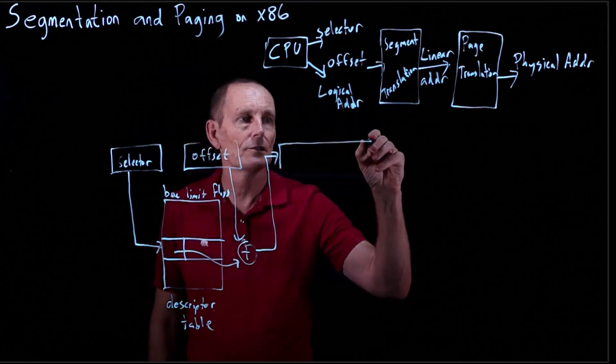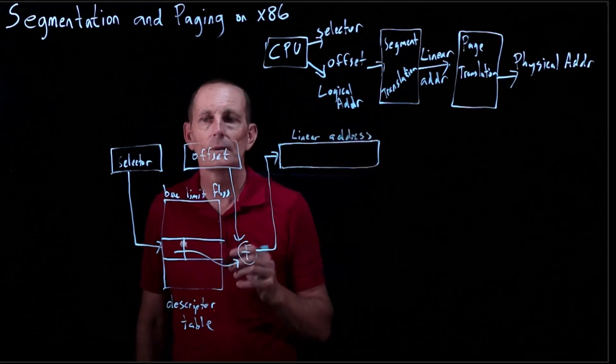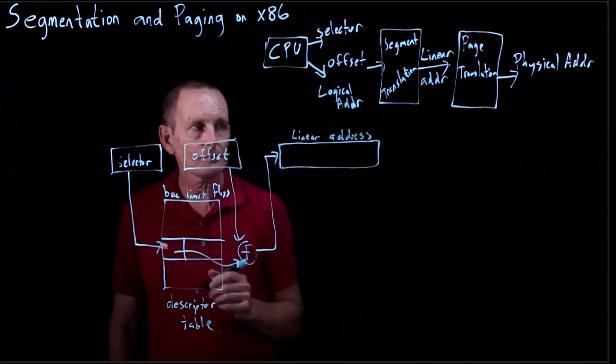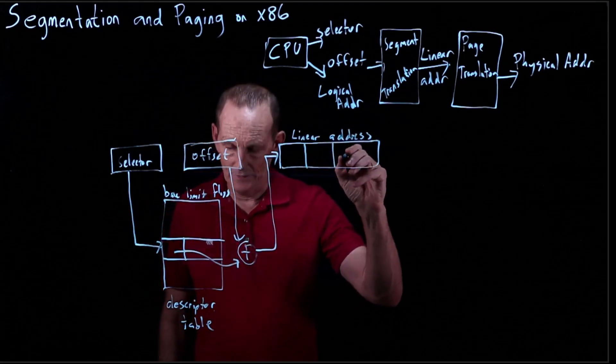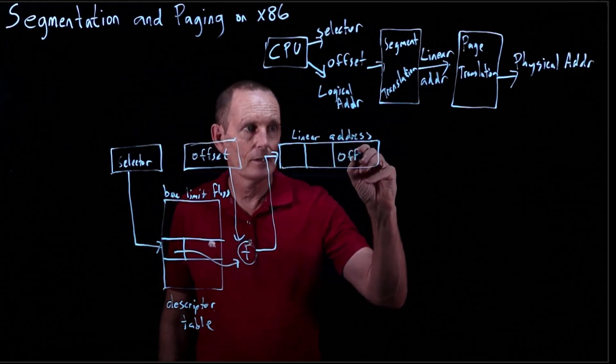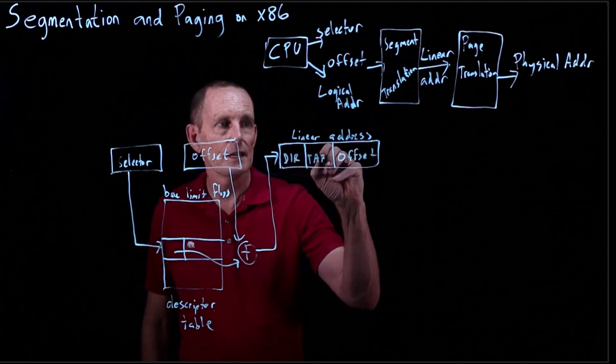The linear address is broken up into three parts: the offset, the dir, and the table.